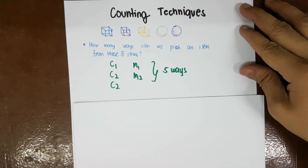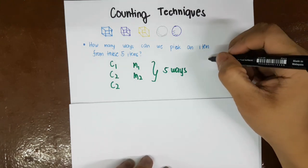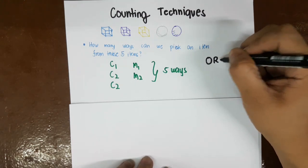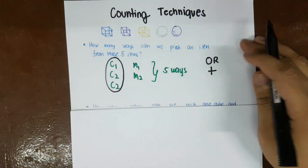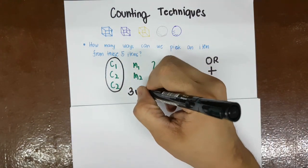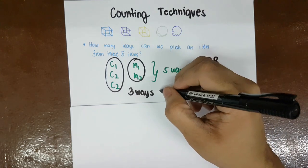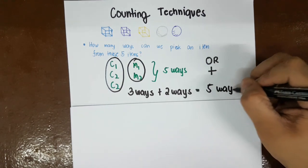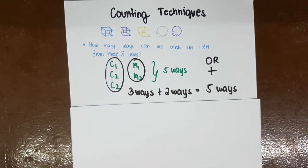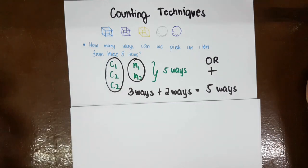Notice I kept saying 'or.' Under counting techniques, 'or' always means addition. In picking three cubes there are three ways, and in picking two marbles there are two ways, so three ways plus two ways equals five ways. Remember: or is always addition.